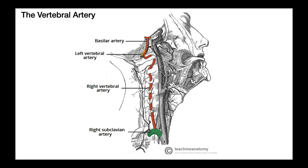The brachiocephalic artery very quickly diverges — bifurcates into two other large arteries. The first is the right common carotid artery, and then there's the right subclavian artery. On the left side, the left common carotid and the left subclavian branch directly off of the arch of the aorta, whereas on the right side, the right subclavian and right common carotid actually branch off of this intermediate brachiocephalic artery.